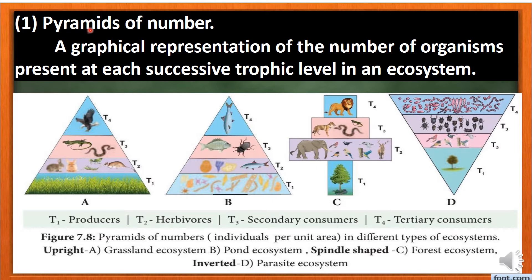The first type is the pyramid of number — a graphical representation of the number of organisms present at each successive trophic level in an ecosystem. So let's look at the ecological pyramid of number.